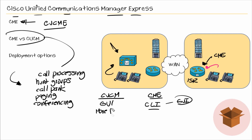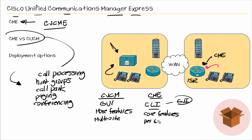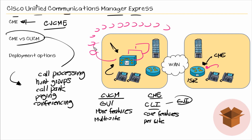CUCM has more features available to it. It's a full-fledged enterprise solution where CME has core features, but some of the advanced features you will only find on CUCM. With CUCM, this is a multi-site solution, whereas CME, since it's installed on the router itself, it's really a per-site solution. With CUCM, you can have multiple servers and many sites — your infrastructure can register or talk to one of these communication servers, therefore making it really scalable.